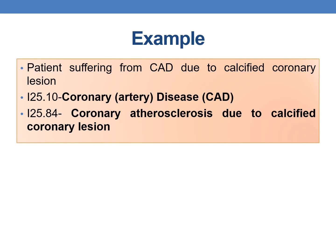Example 3: Patient suffering from CAD due to calcified coronary lesion. You need two codes: I25.10 to indicate coronary artery disease, and I25.84 to indicate coronary atherosclerosis due to calcified coronary lesion. By this, we complete the coronary artery disease with angina guidelines. Thank you for watching. Please subscribe for further videos on medical coding and CPC training.